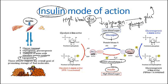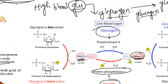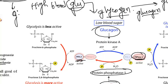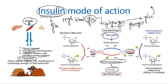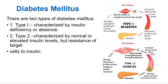When insulin is present, there will be less glucose in the blood. When insulin is absent, blood glucose concentration starts rising after eating. A problem with insulin production can create different conditions and diseases, which is known as diabetes mellitus.